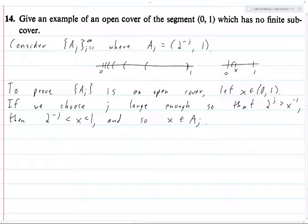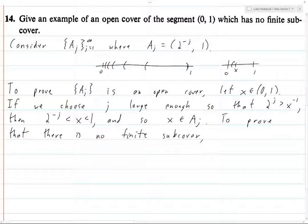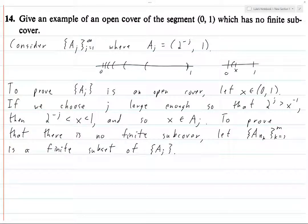So to prove that there is no finite sub-cover, what we're going to do is let a sub n k from k equals 1 to, let's say, m is a finite subset of a j. So this is a collection, we have a n1, a n2, a n3 all the way up to a n m.